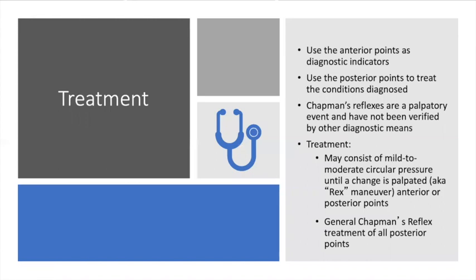The treatment — as I stated at the beginning of this lecture — Dr. Chapman said the anterior points he used as diagnostic indicators. For the posterior points, there were various types of treatments he used to treat the viscerosomatic reflex. To my knowledge, Chapman's reflexes are palpatory events; I'm not sure they have been verified by other means. I'm not sure how Dr. Kimberley and Dr. Kuchera made these correlations — they're more historical in osteopathic literature. The treatments available were either mild to moderate circular pressure until you palpate a change, known as the REX maneuver, applied to anterior or posterior points. There is also a general type of reflex treatment for all the posterior points. I will demonstrate the general Chapman's reflex in an upcoming lecture.